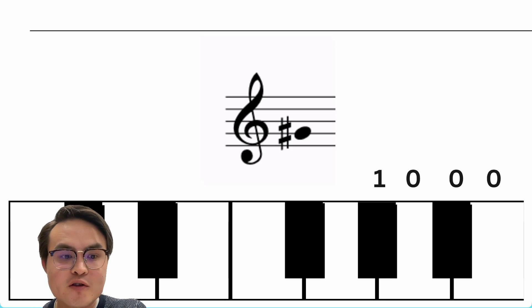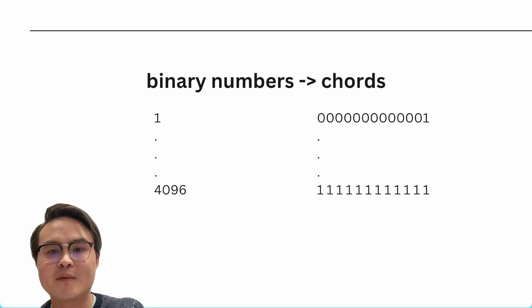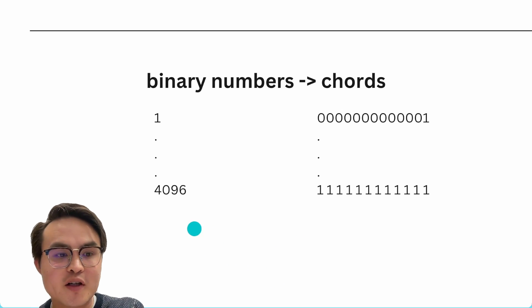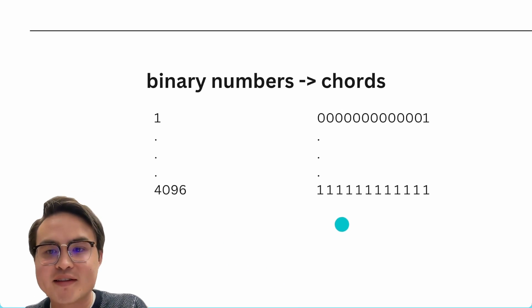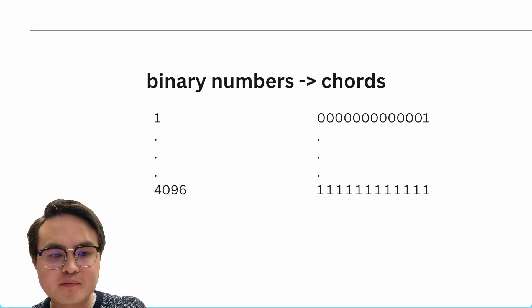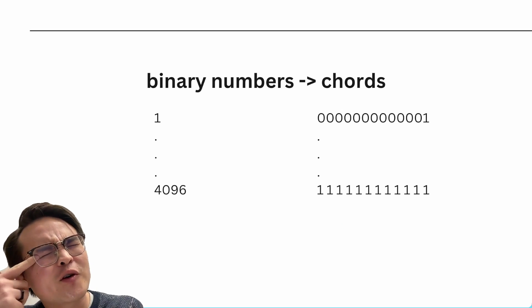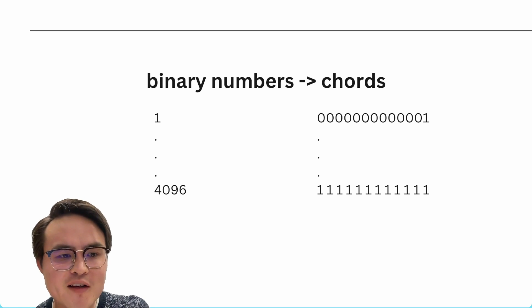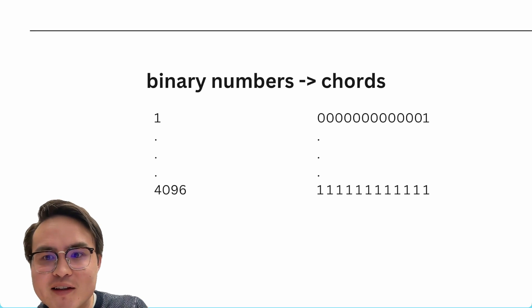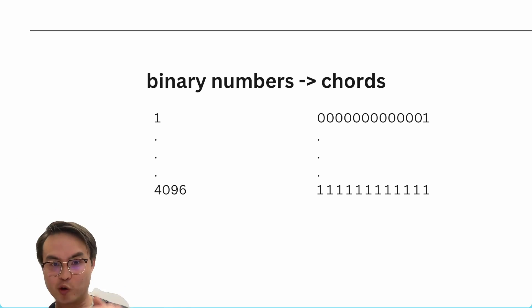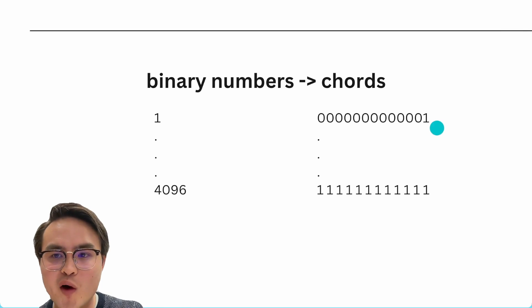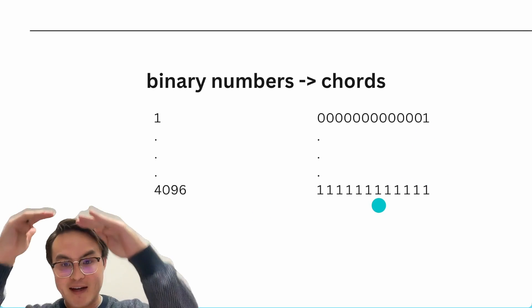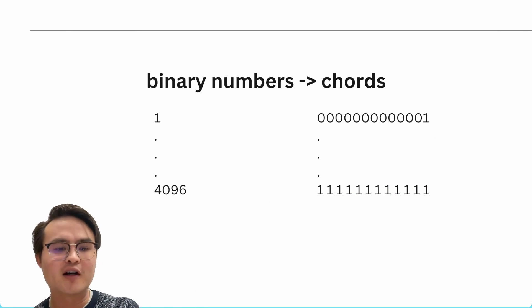If you do this all the way to 4096, the binary number for 4096 is twelve 1s. Once you have 12 ones, that is the 12-note chord. This is a one-note chord, this is a 12-note chord, and everything in between is all the combinations.